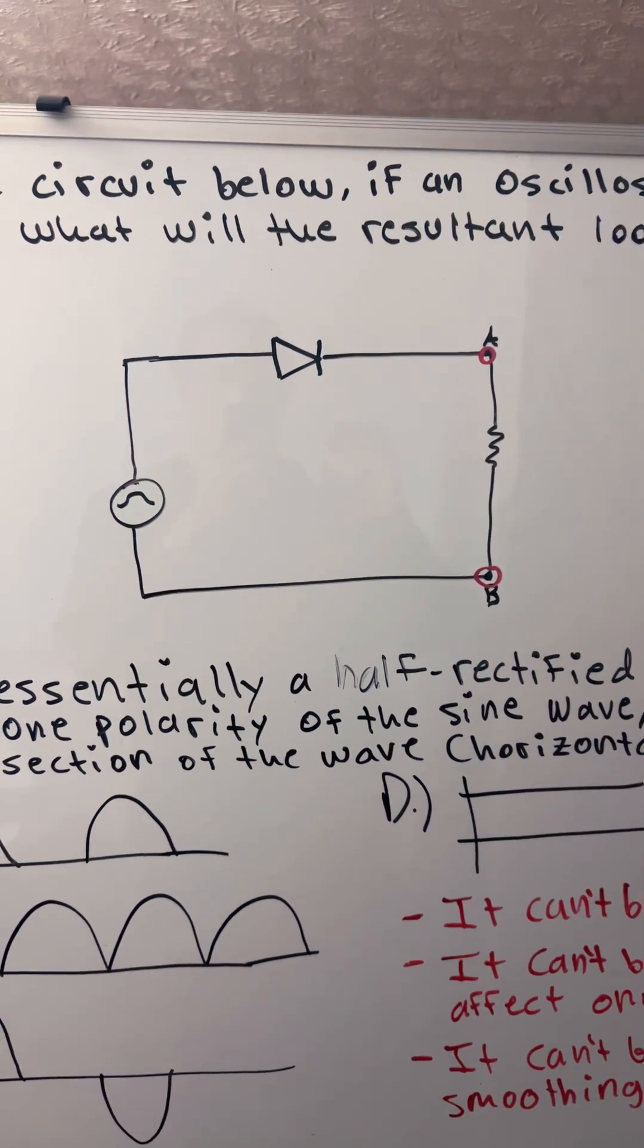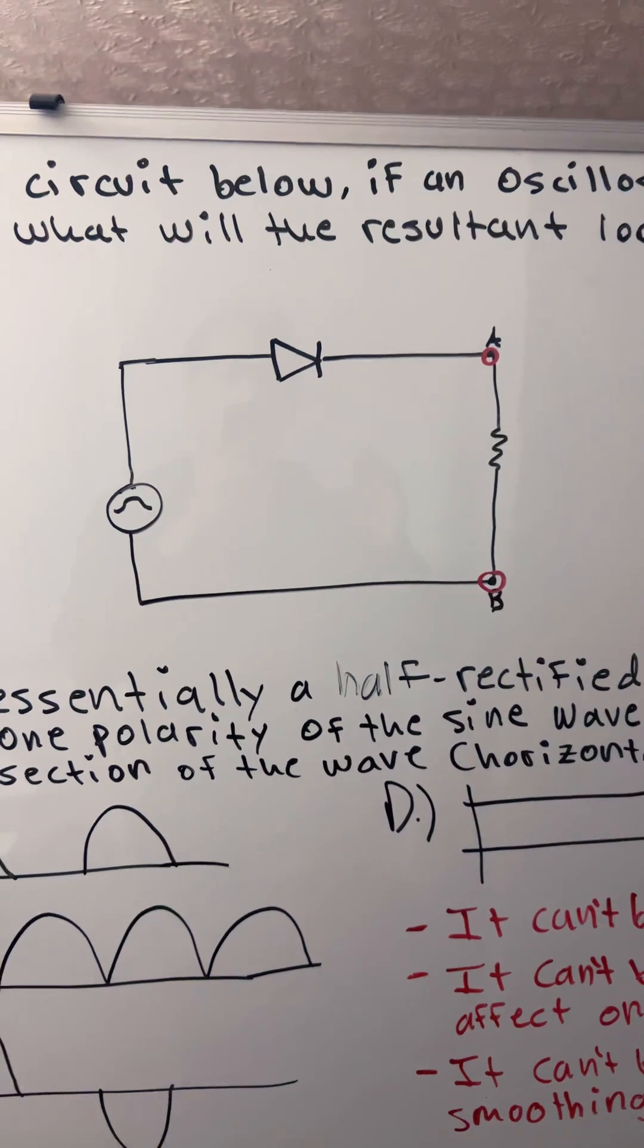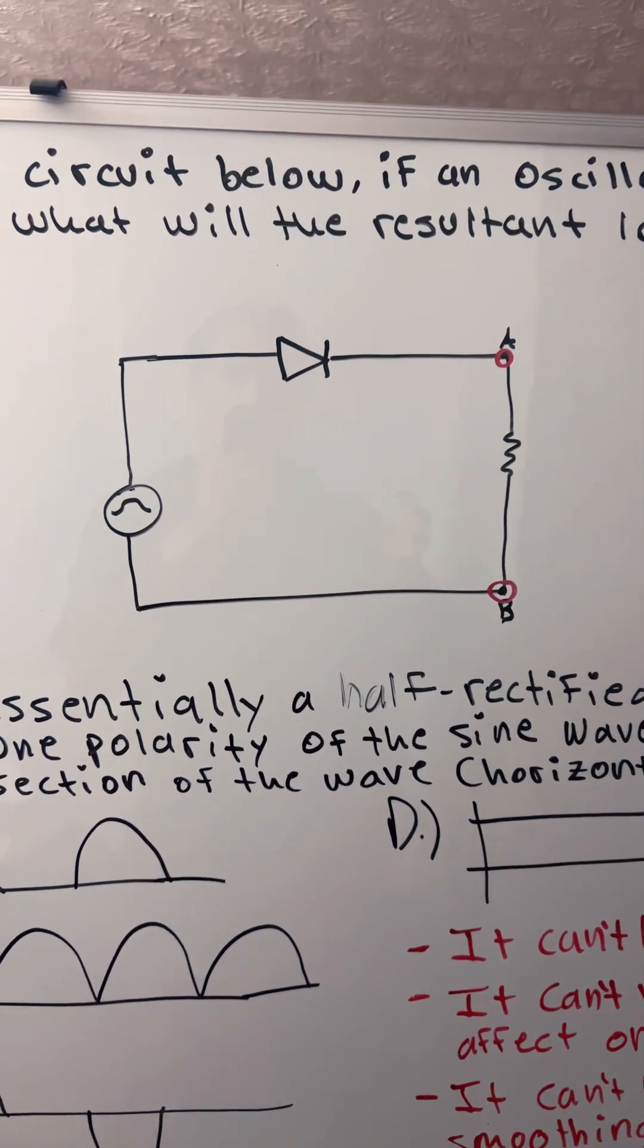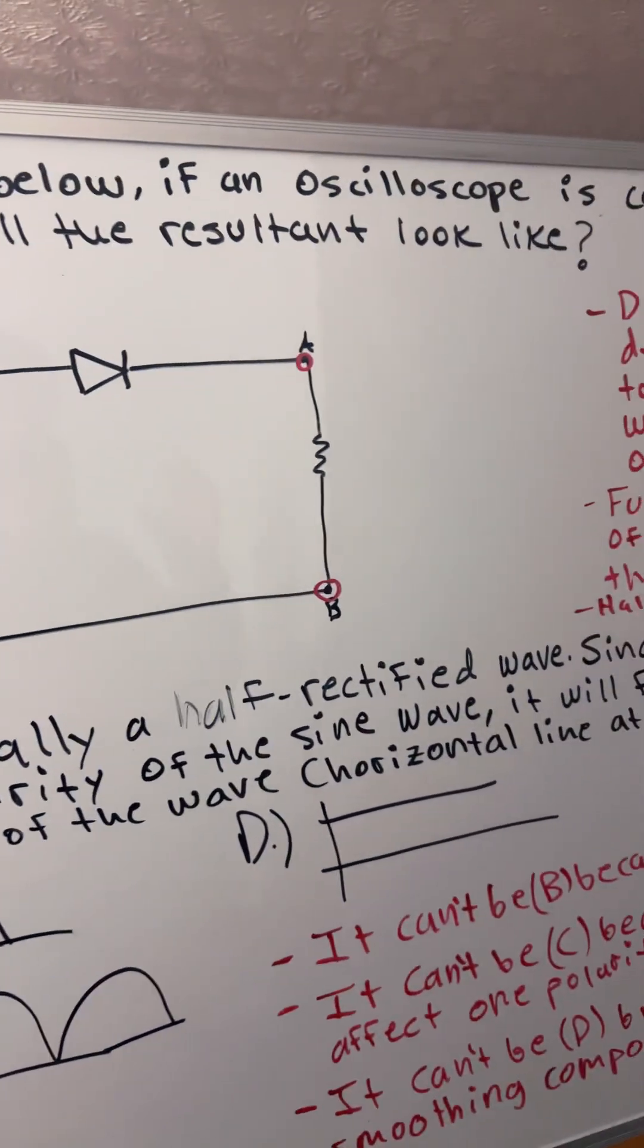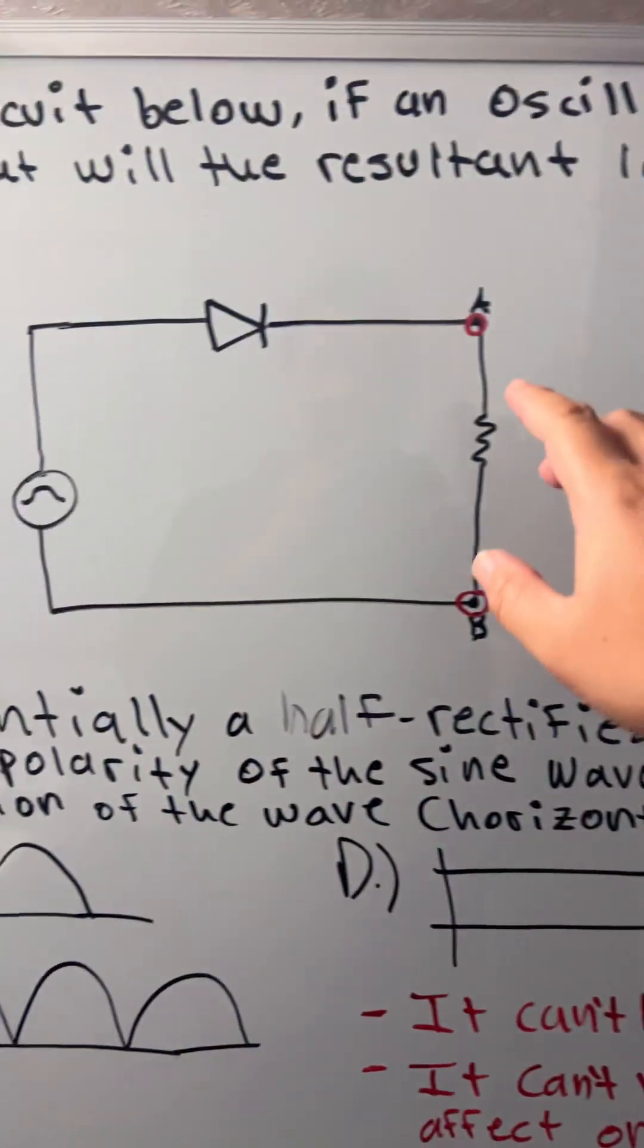Hello everyone. Today I'm going to show you how the resultant will look like if the oscilloscope is connected to points A and B in this given circuit.